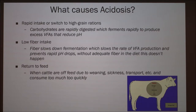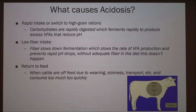Without adequate fiber in the diet, that buffering effect doesn't happen. Additionally, whenever cows are returned to feed — whether they were off feed due to being weaned, sick, transported, or for other reasons — when they're put back on, they can consume too much too quickly, which reduces the pH drastically.